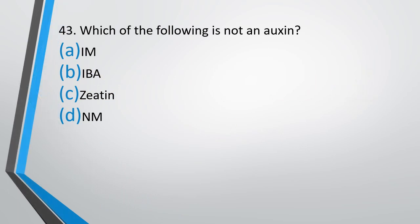Question No. 43: Which of the following is not an auxin? IAA, IBA, zeatin, NAA. The correct answer is option C, zeatin is not an auxin.